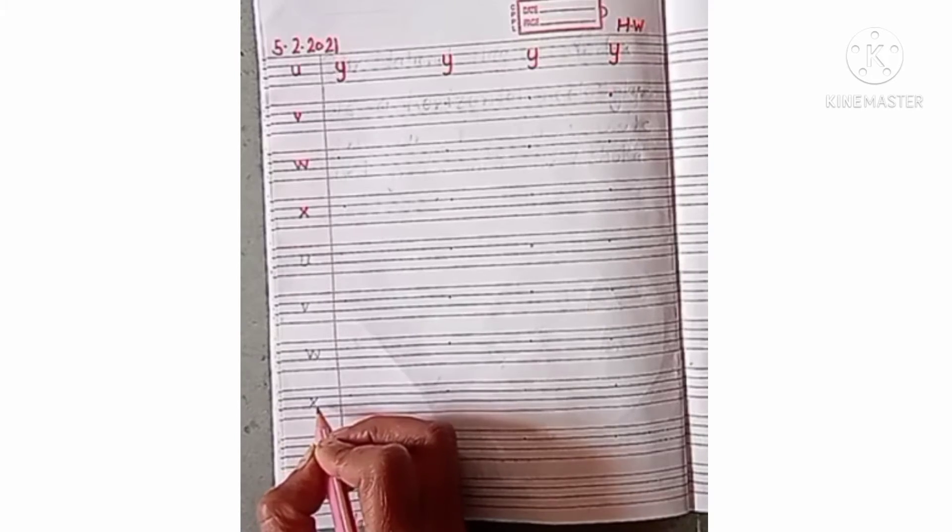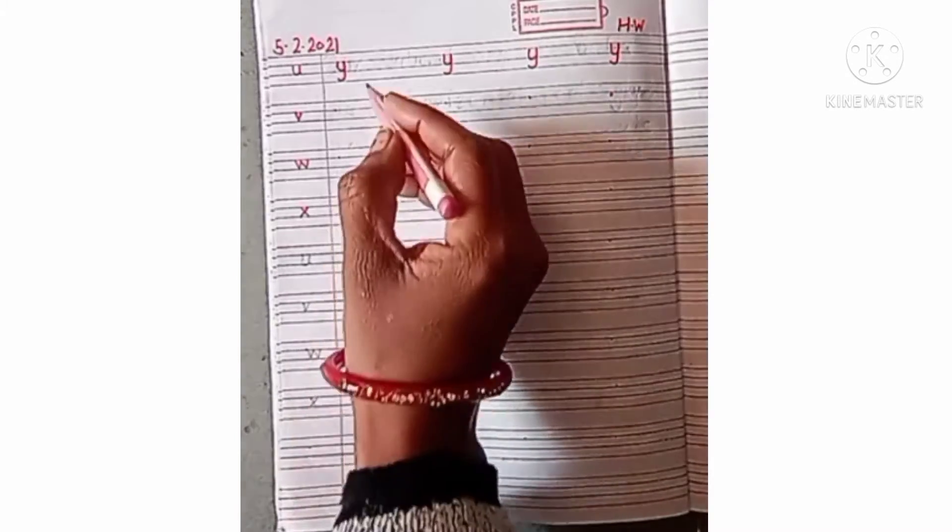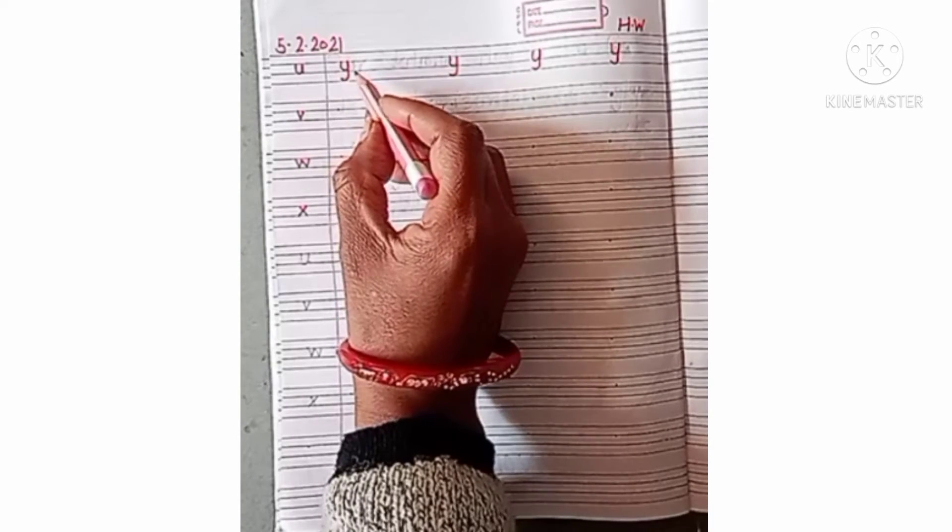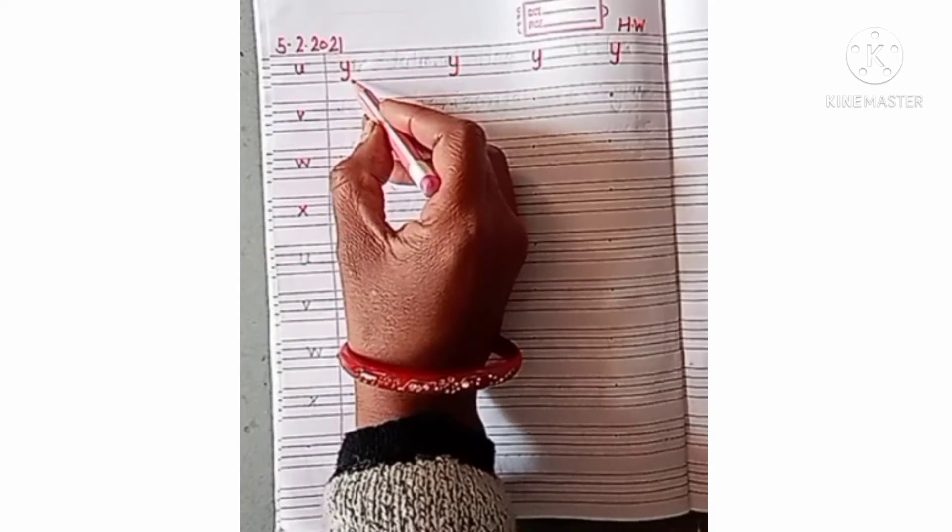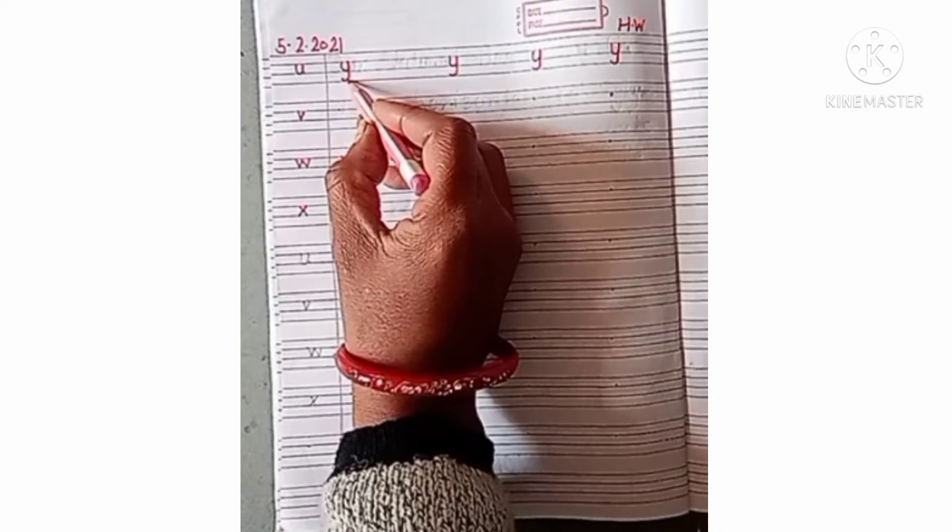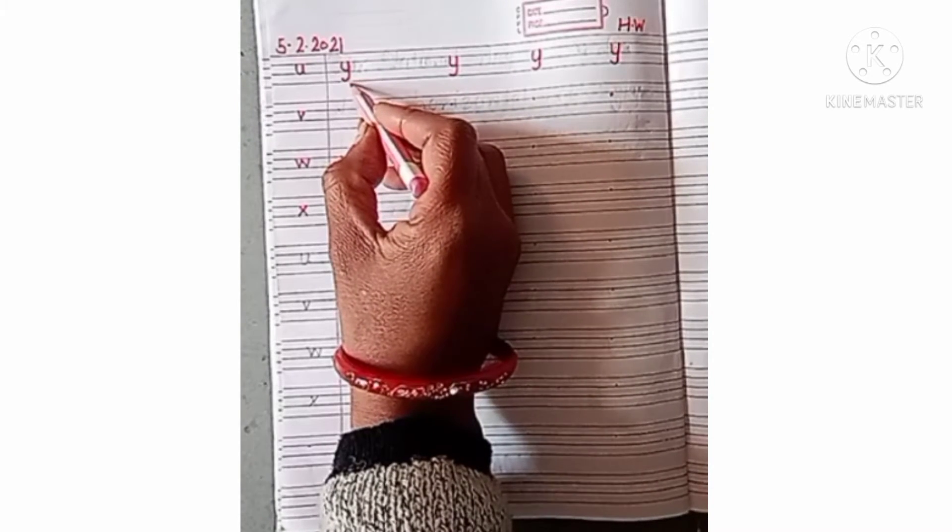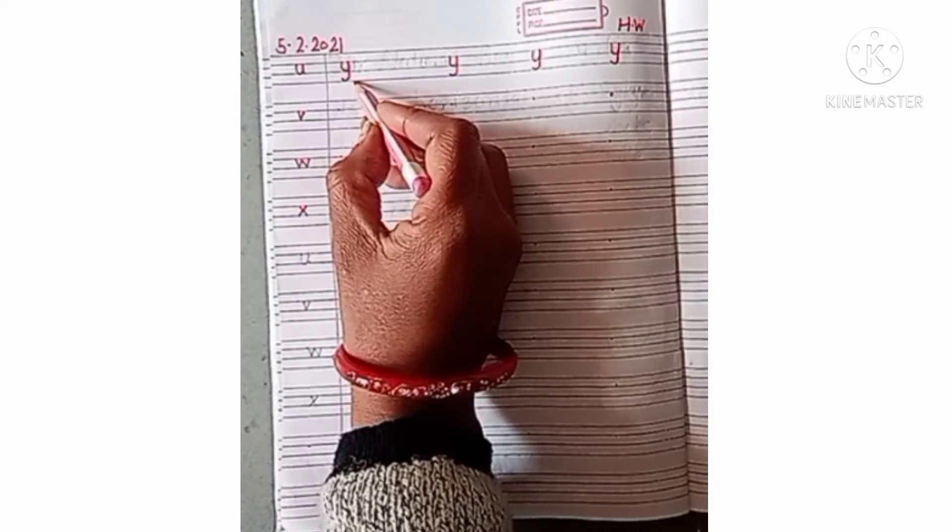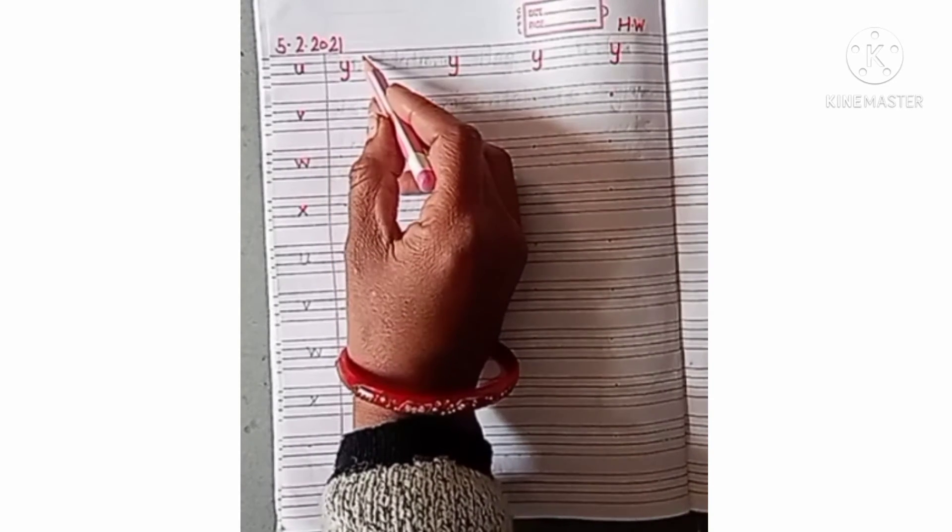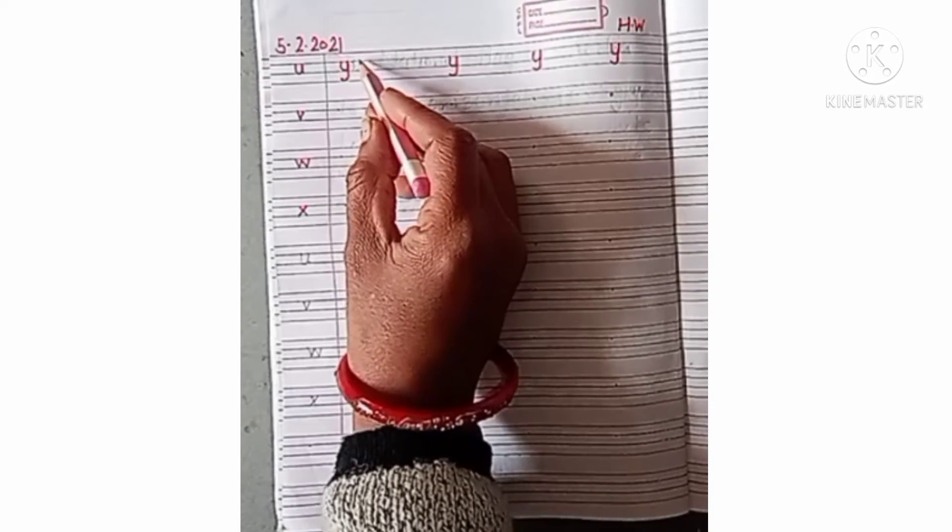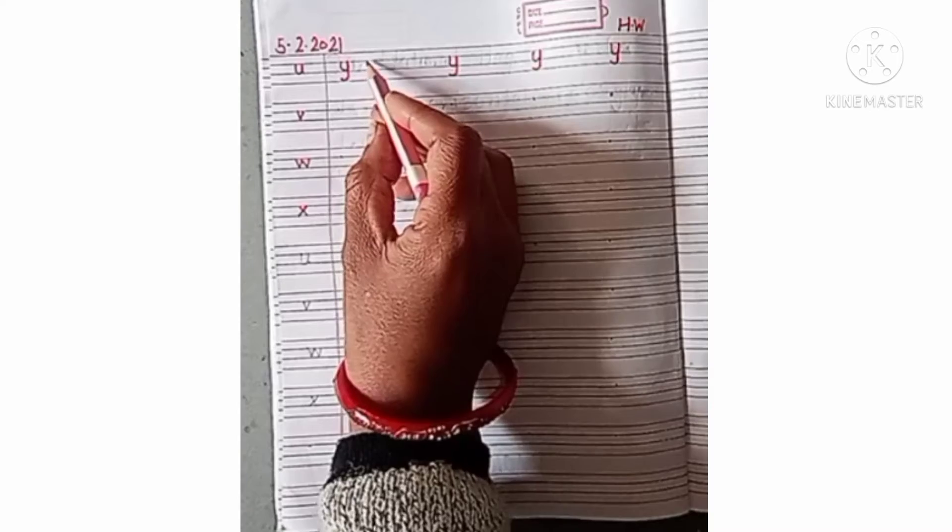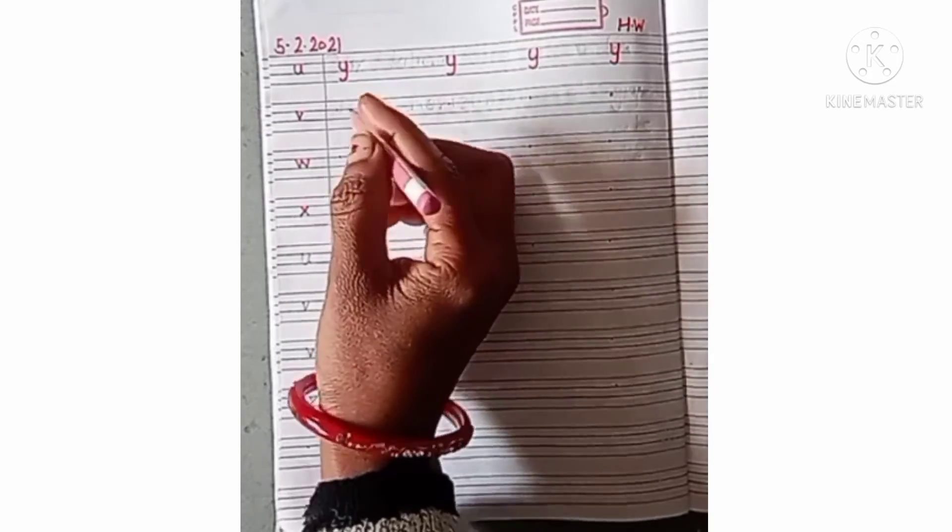और x की बाद कौन सा letter आएगा y small y को कितनी lines में लिखेंगे बिटा three lines में one two three कितनी lines में three lines में और कौन सी three lines में बिटा top three या bottom three? Bottom three lines में उपर वाली first line को हम leave कर देंगे उसको क्या करेंगे हम छोड़ देंगे बिटा और जो second line से लिएकर last वाली line है न bottom three lines नीचे वाली three lines उसमें right down करेंगे।